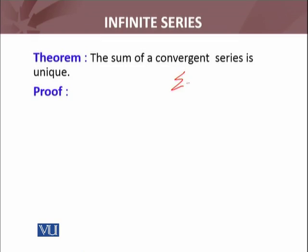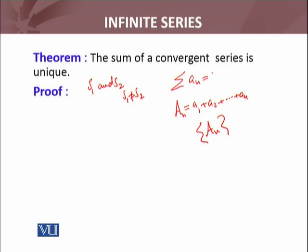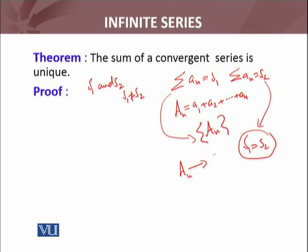The sum of a convergent series is unique. Suppose we have series Σaₙ and we define the sequence of partial sums Sₙ = a₁ + a₂ + ... + aₙ. It means if I suppose the series is convergent and it converges to two different real numbers s₁ and s₂, where s₁ ≠ s₂ — meaning the sum of the series is both s₁ and s₂ — I have to show that s₁ = s₂. This means the sequence of partial sums converges to both s₁ and s₂ as n approaches infinity.